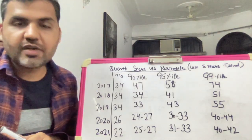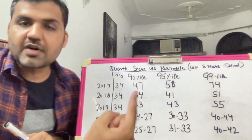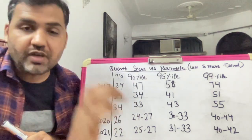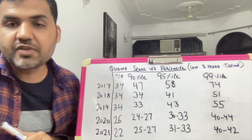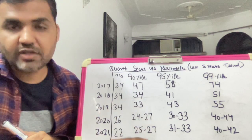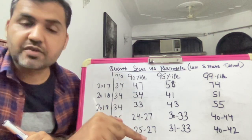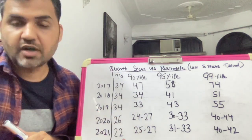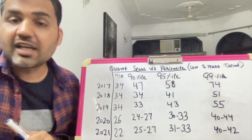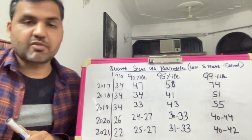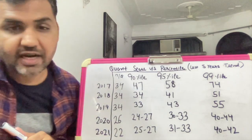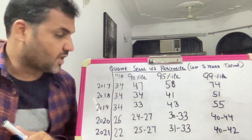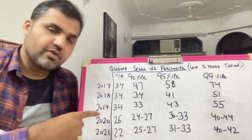Hello everyone. In this video we are going to talk about quant score versus percentile over the last five years. This trend is a very important observation that you need to look at when examining score versus percentile specifically for the quant section, and this observation might help you a lot in deciding the number of questions you are supposed to target in CAT for your quant section.